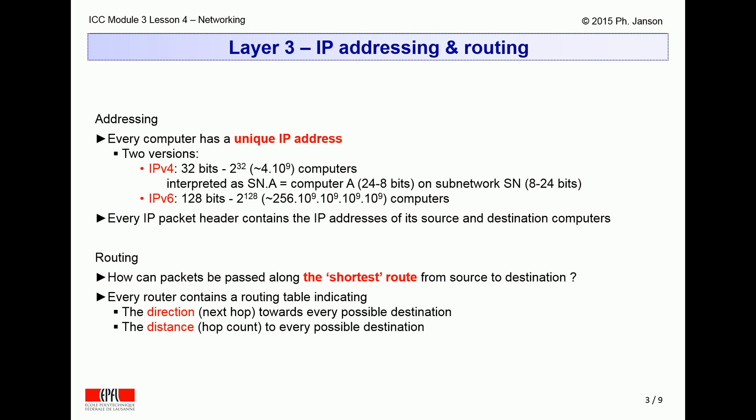Thus, when a router receives a packet with a given destination address in its header, it simply forwards that packet onto the next router given by the routing table on the way to that destination, which guarantees that the path is the shortest path to that target address.